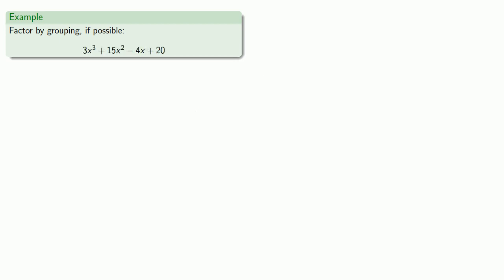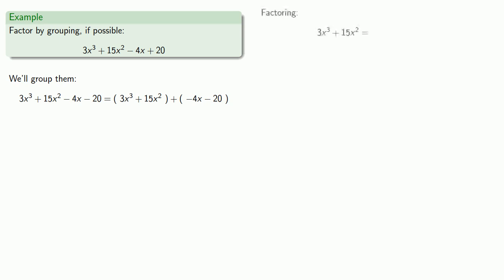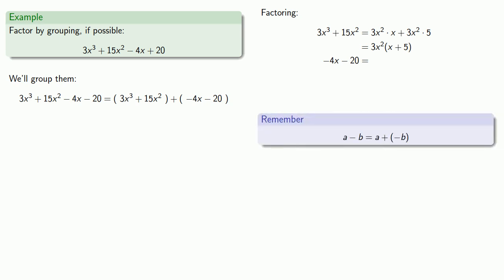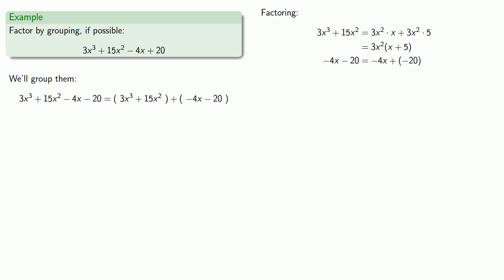Let's take another set of terms. Since grouping the first two terms and the last two terms worked in the other two cases, let's try the same thing this time. We'll group the first two terms and the last two terms. Looking at the first two terms, 3x cubed plus 15x squared, we see there is a common factor of 3x squared. For the second group, minus 4x minus 20, it can be tricky when dealing with a subtracted term. A useful thing to remember is that you can rewrite any subtraction, a minus b, as a plus negative b. So we rewrite minus 4x minus 20 as minus 4x plus negative 20.